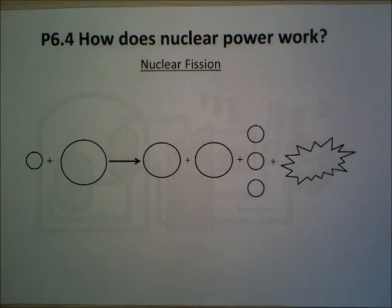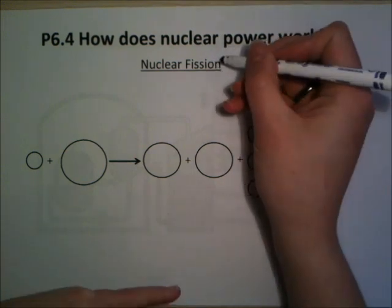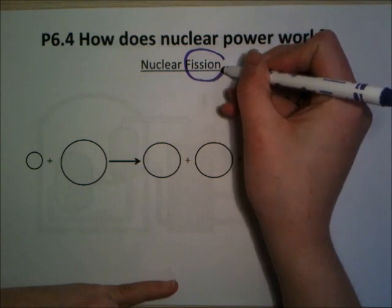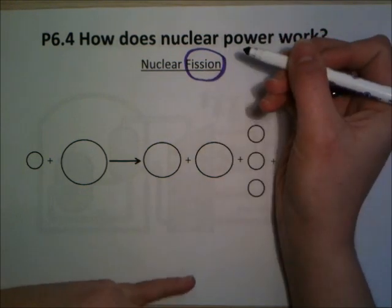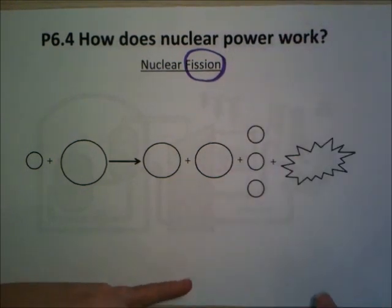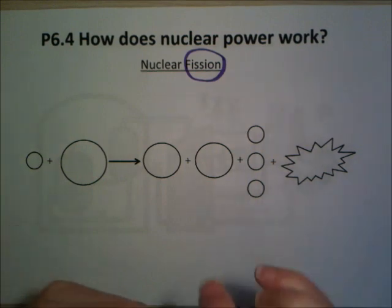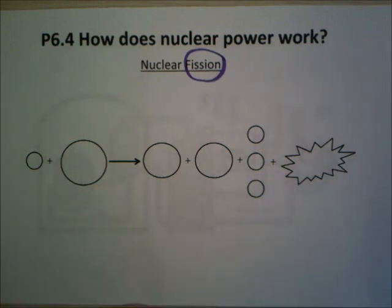The first thing we need to know about for nuclear power is nuclear fission. A few videos back, I talked about nuclear fusion, which is where two hydrogen nucleuses are forced together and join to make a helium nucleus, and they produce lots of energy. For small nuclei, that's the way to go to make energy.